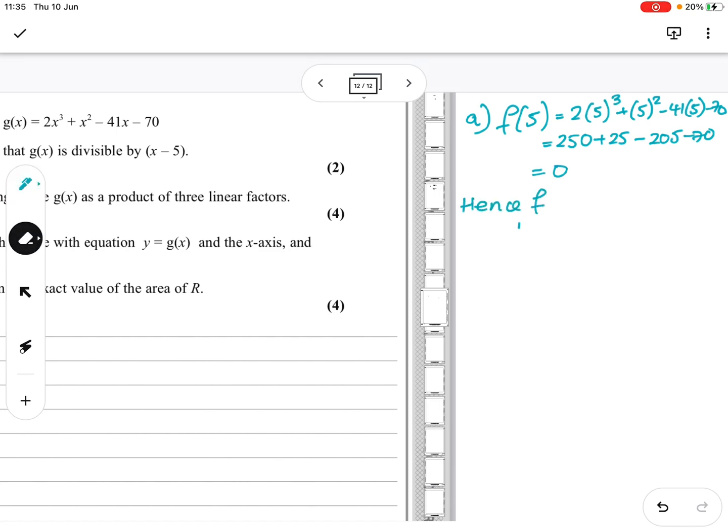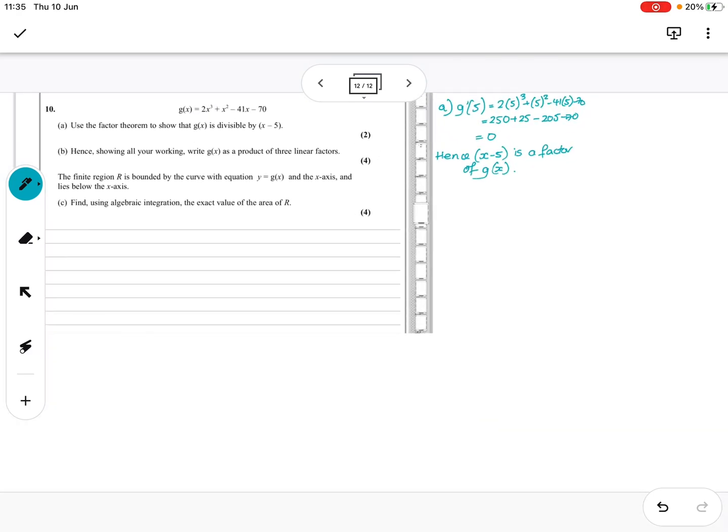Hopefully it should give us 0, and then you always have to write, hence, x - 5 is a factor of g(x). So I've got to change that to g. So that's the first bit done. Two marks in the bag.